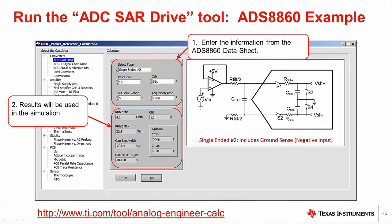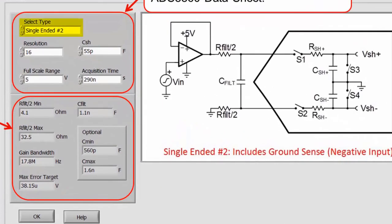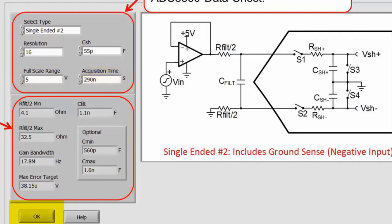Now that we have collected all the required information, let's use the calculator. The URL for this tool is located at the bottom of the slide. At the top of the calculator, first select the ADC input type. For this case, we are using a single-ended configuration with ground sense. Notice the schematic circuit at the right shows the selected configuration. Next, enter the resolution, input sample and hold capacitor CSH, full-scale range, and acquisition time. Press OK and the value of the range for the filter resistor and capacitor is given, as well as the gain bandwidth for the amplifier and the maximum error target. This information will be used to set up our SPICE simulations.